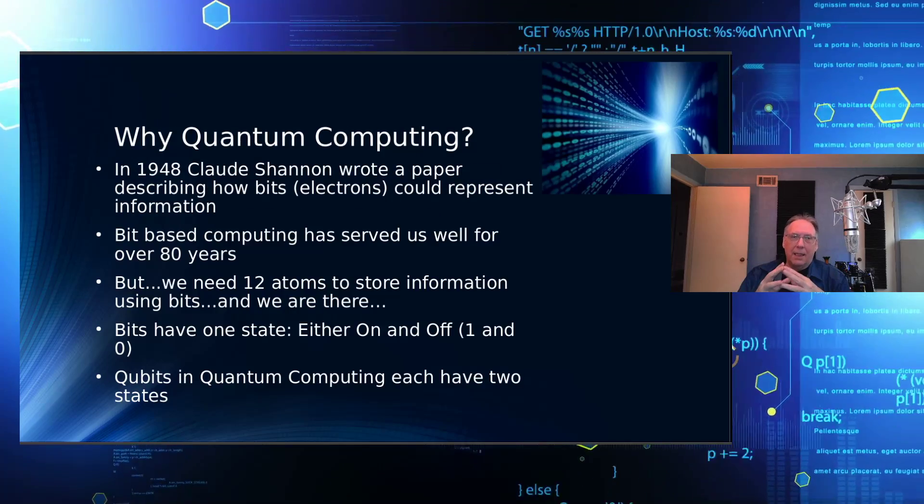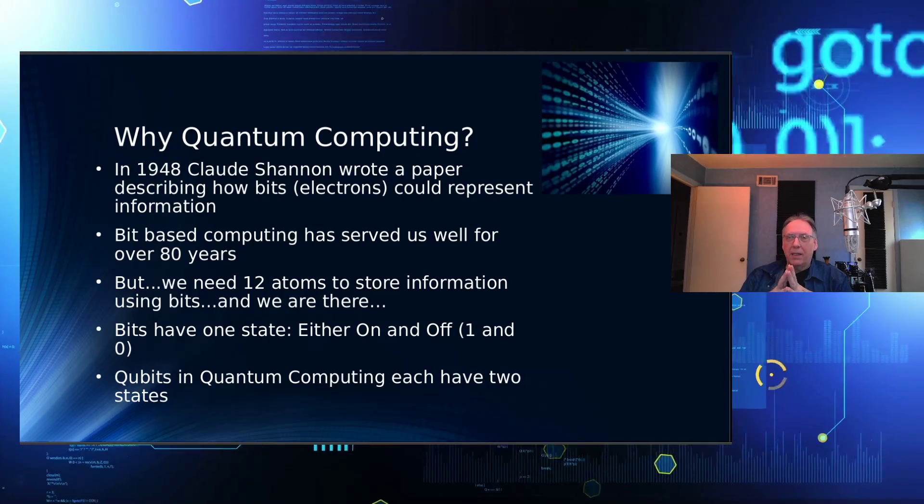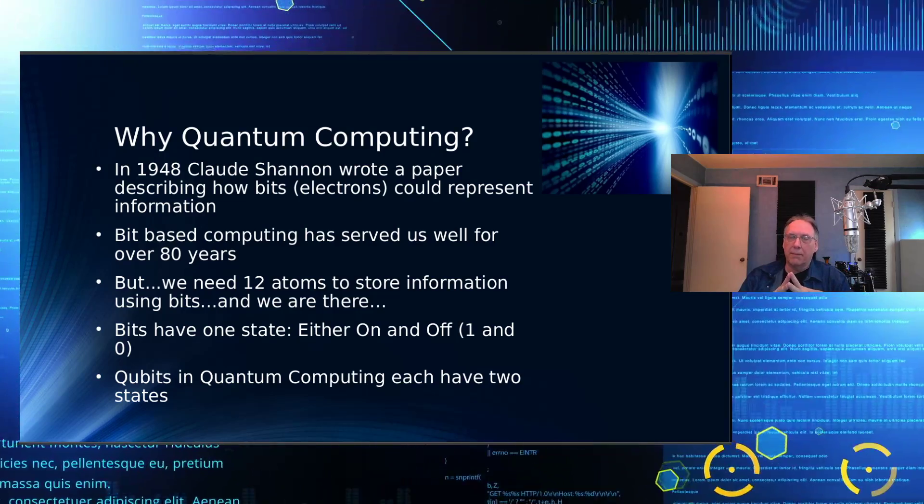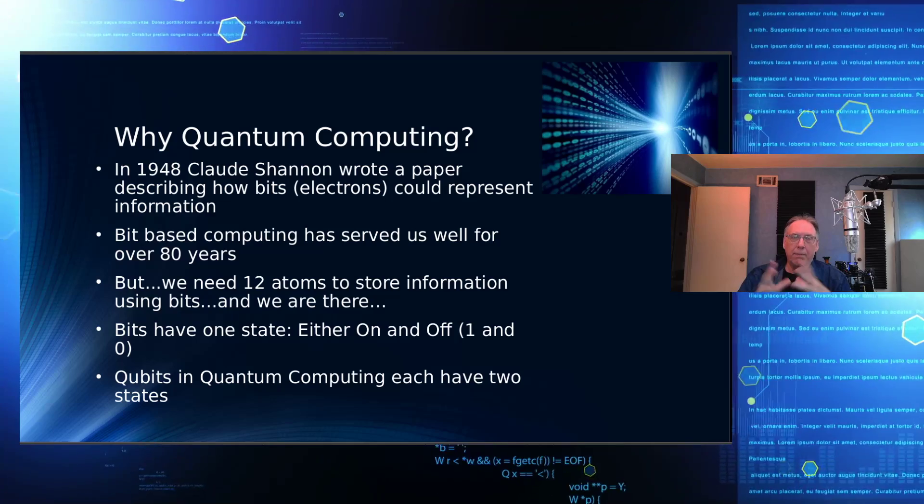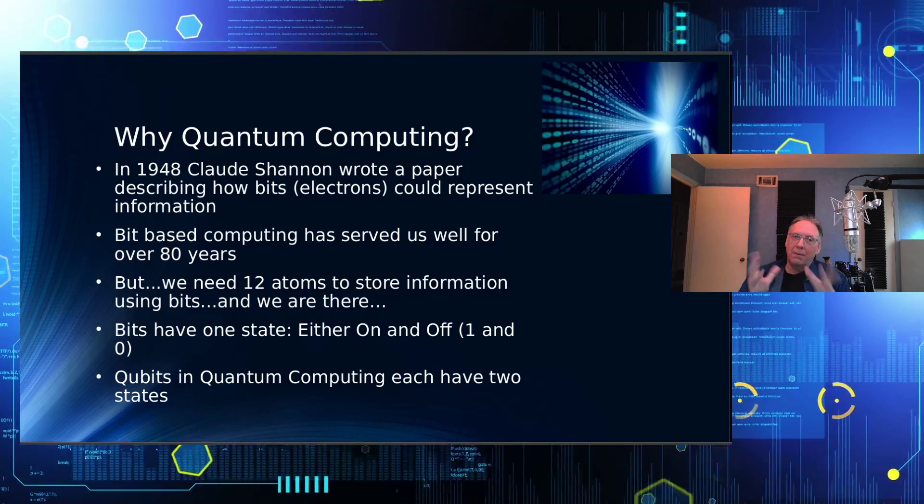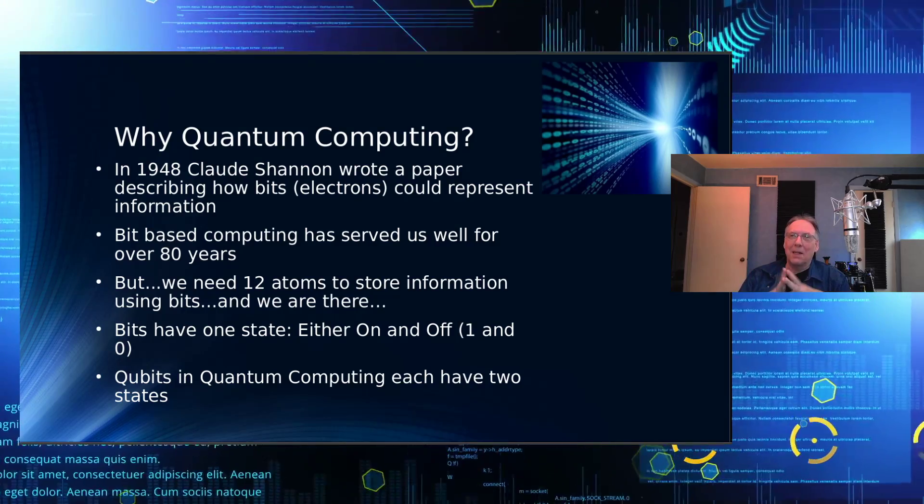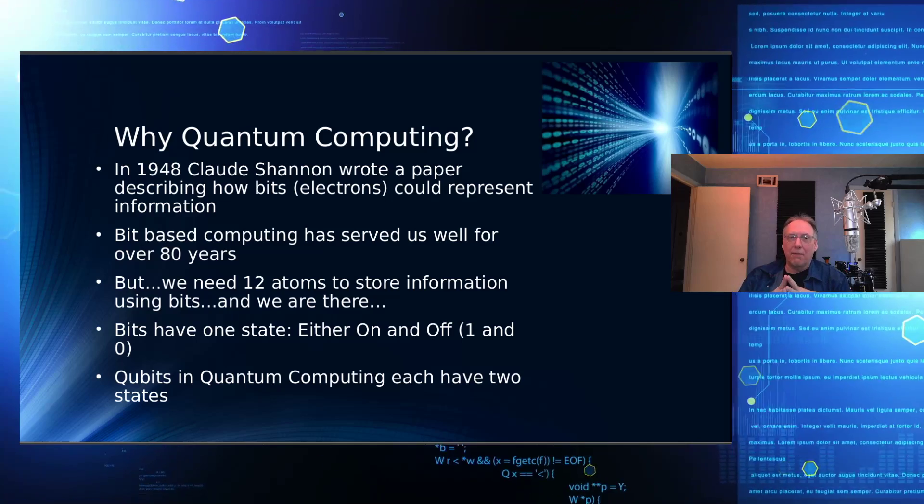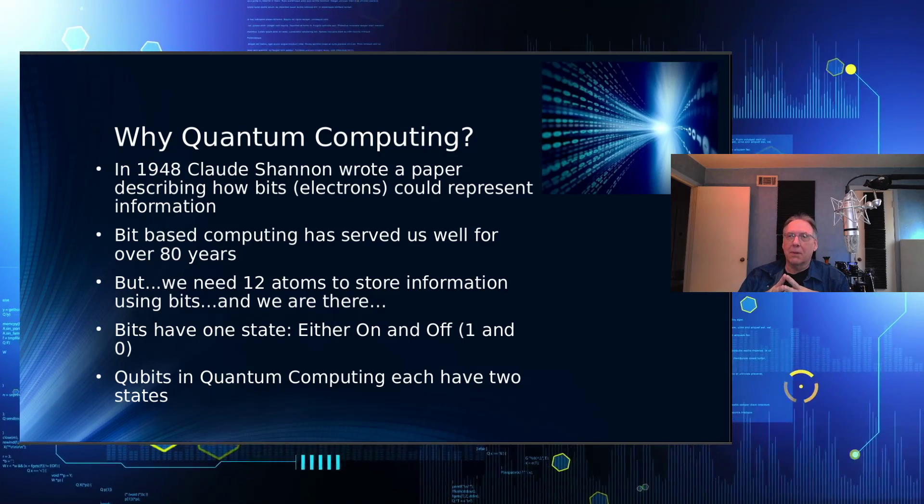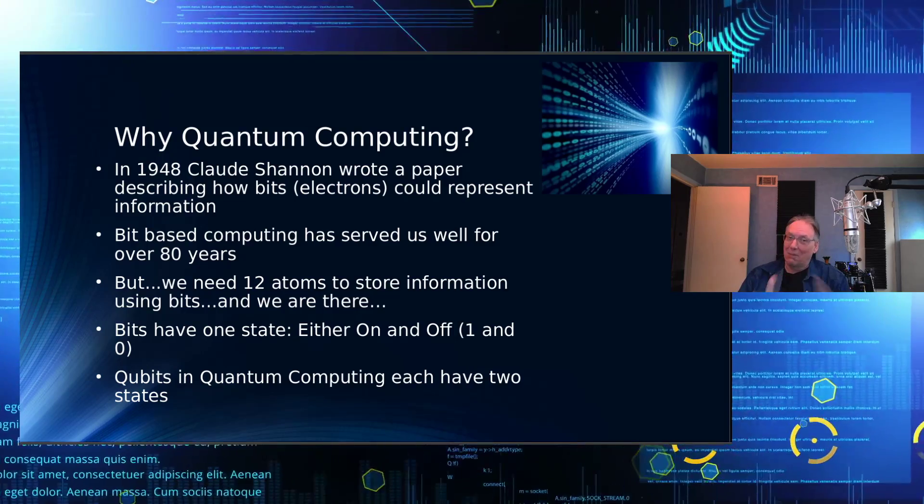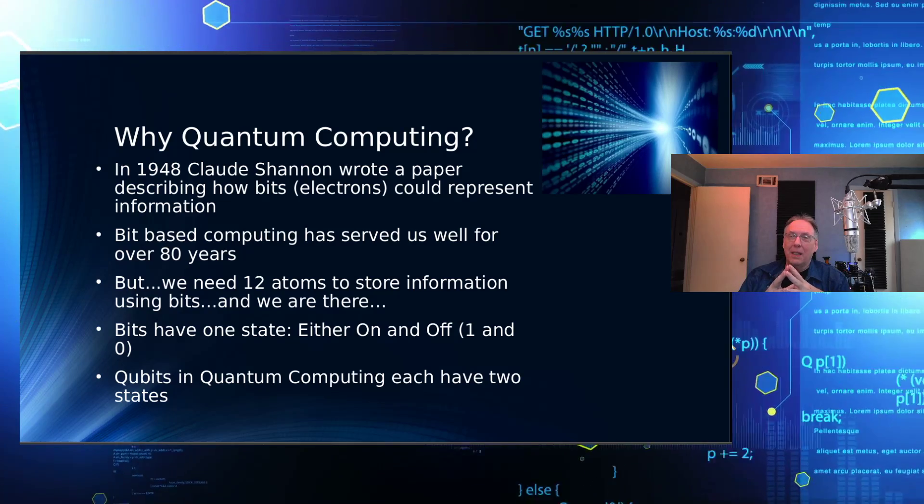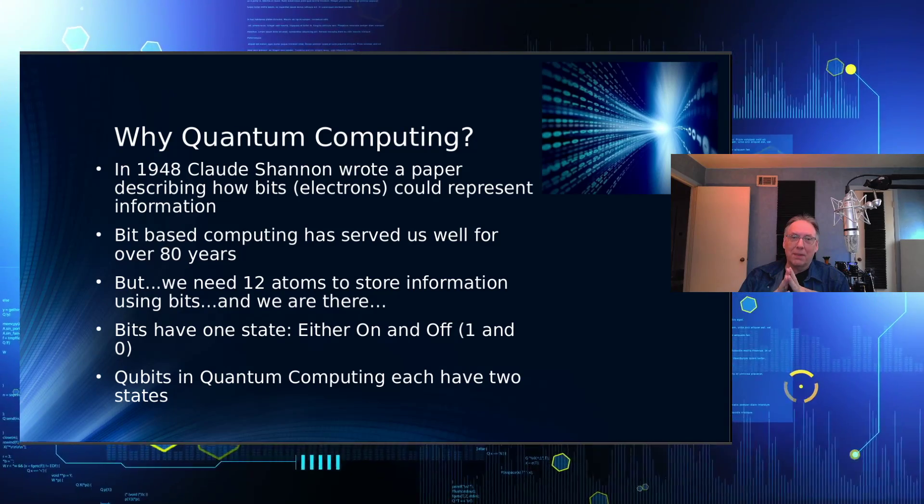In 1948, Claude Shannon wrote a paper describing how bits or electrons could be used to represent information. Bit-based computing has served us very well over the past 80 years, but we're reaching a limit on that as well. We need 12 atoms to store information using bits. And that would be to store it to disk, of course. And we're there. That's where we're at right now.